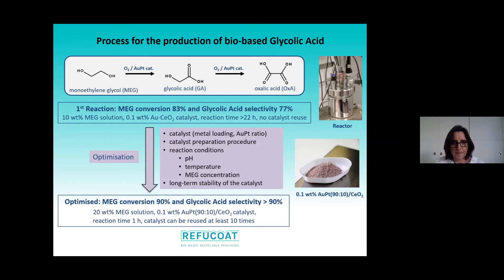So we decided to optimize both the catalyst — in terms of metal loading and the ratio of gold to platinum — and the preparation procedure. We also looked at reaction conditions: pH, temperature, glycol concentration, pressure, and long-term catalyst stability. After finishing our optimization work, we ended up with a glycol conversion of 90% and glycolic acid selectivity consistently higher than 90%, on most reaction conditions 92% to 95%. We are working in quite concentrated solutions. It is a fast reaction — reaction time is only one hour — and the catalyst can be reused at least 10 times.